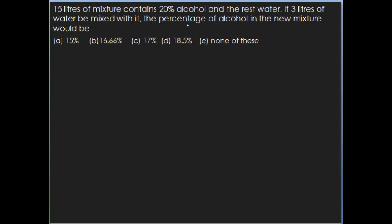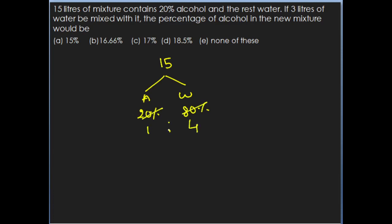The next question: 15 liters of mixture contains 20% alcohol and the rest water. If 3 liters of water be mixed with it, the percentage of alcohol in the new mixture would be. So they say the 15-liter mixture contains 20% alcohol; therefore the remaining 80% is water. Hence alcohol and water are in the ratio 1 is to 4.